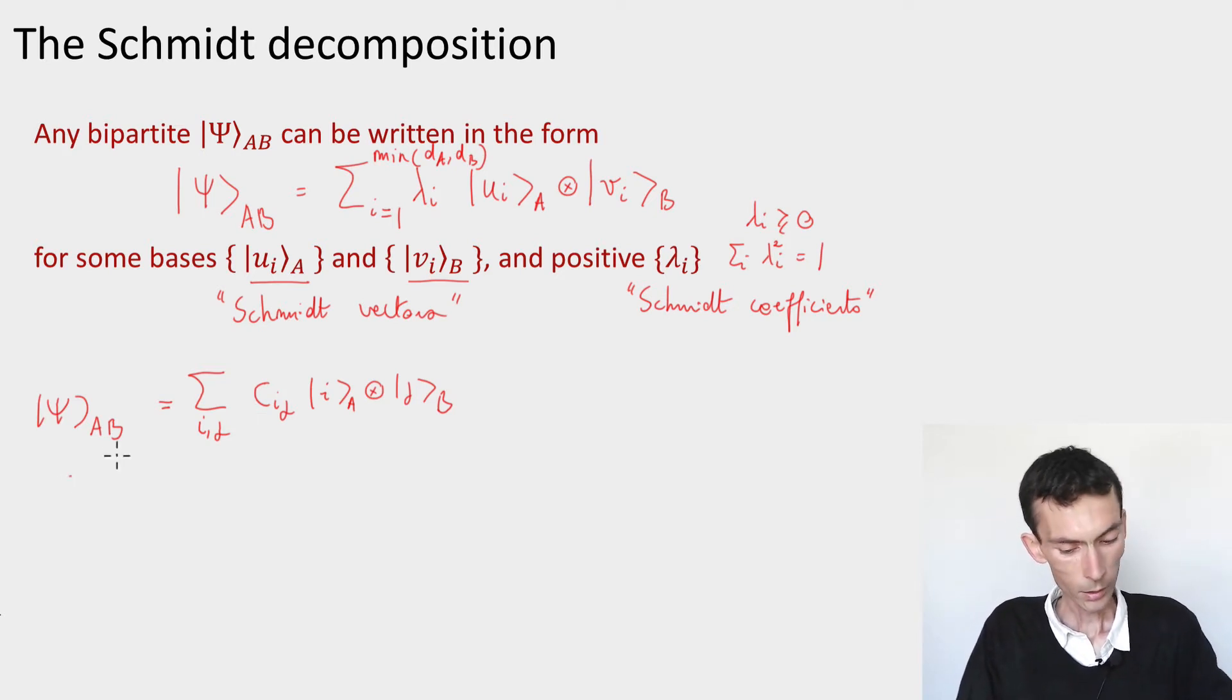Now we can look at these coefficients as a matrix. I can introduce a matrix C, which is the matrix with coefficients cij. And if we're given a matrix, what do we want to do? We want to write it in a convenient form, and a convenient form is given by the singular value decomposition.